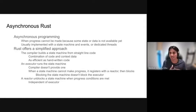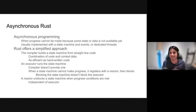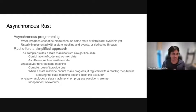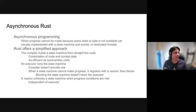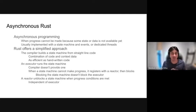The problem with the dedicated-thread approach is that while you wait for your state or data, the thread is idle — burning a whole call stack and bunch of state. This doesn't scale. What Rust offers is that the compiler builds the state machine from straight-line code. The developer writes straight-line code as if doing the dedicated-threads approach, so it's very straightforward.